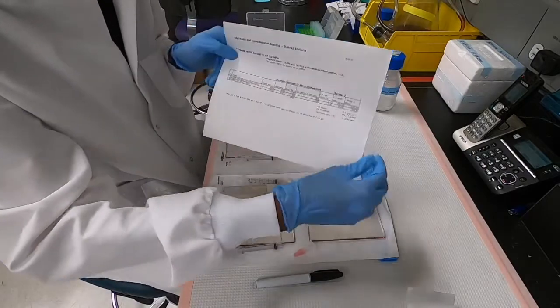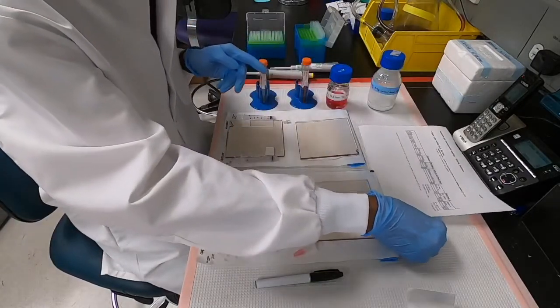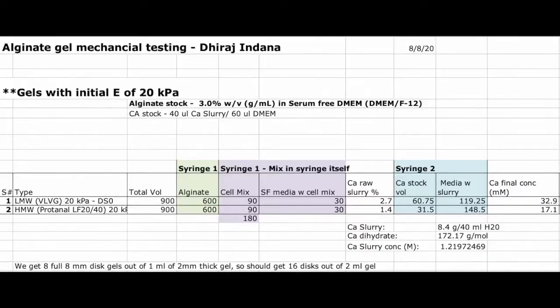Here is the recipe for making alginate hydrogels which we will be following today. As you can see, we need a couple of syringes to make our hydrogels, and we will be adding alginate, DMEM, and calcium sulfate as shown.